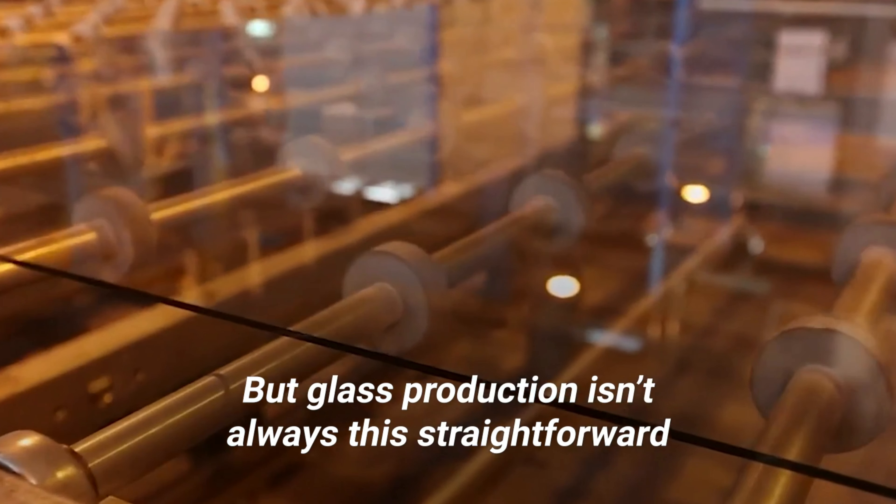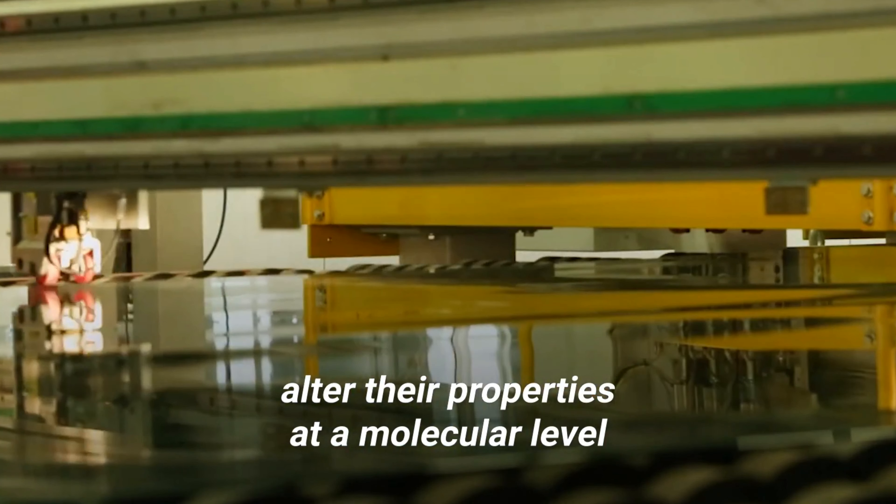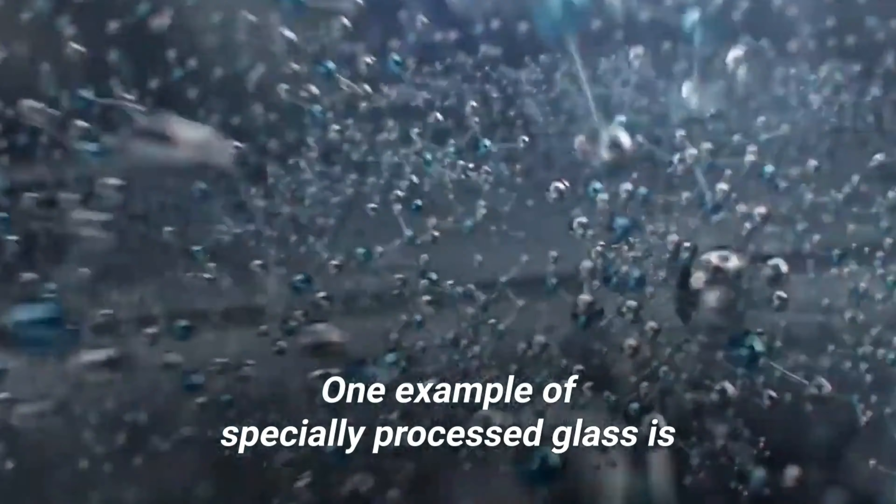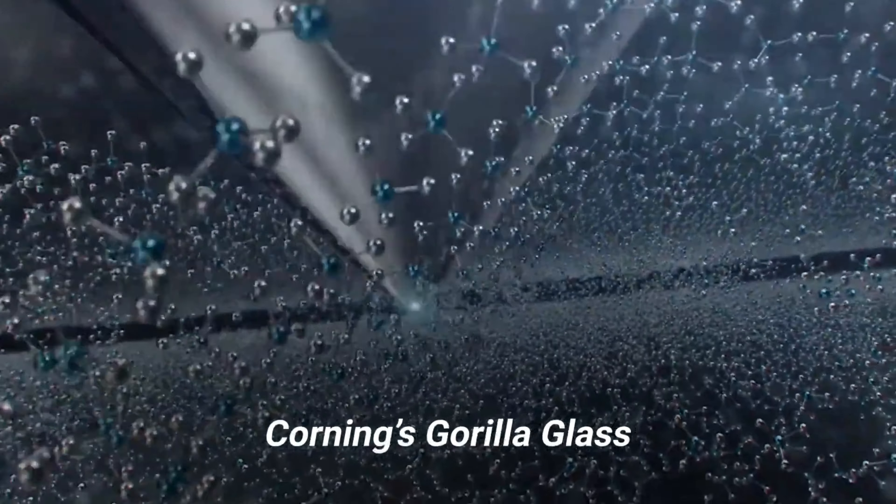But glass production isn't always this straightforward. Manufacturers can further process their glass products to alter their properties at a molecular level. One example of specially processed glass is Corning's Gorilla Glass. It's more scratch-resistant than regular glass, less brittle, and mere microns thick.